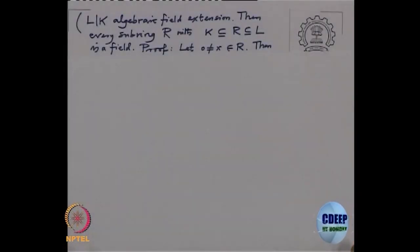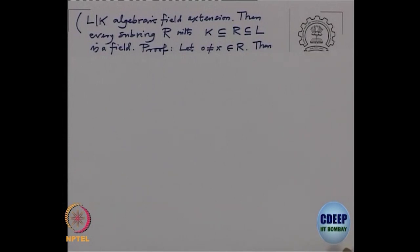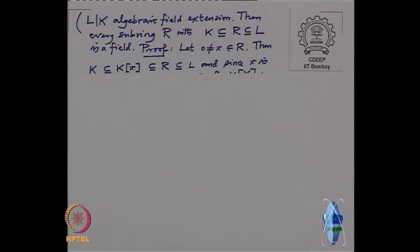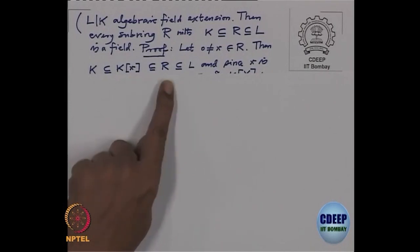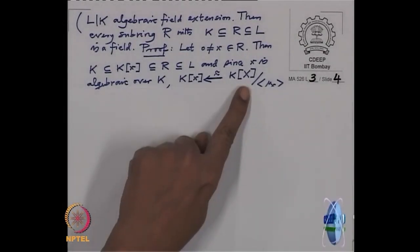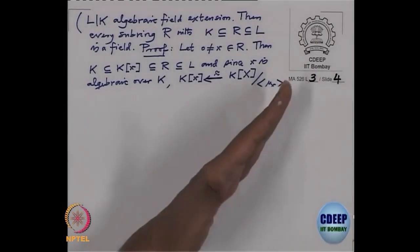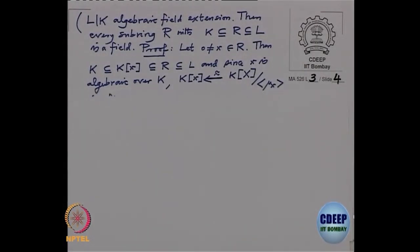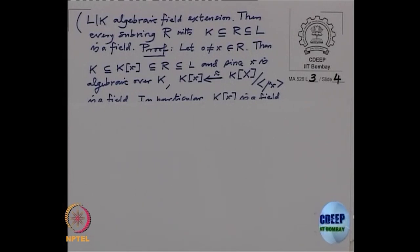So consider an algebraic extension of fields with a subring R in between. I want to show R is also a field — that every nonzero element of R is invertible. If x is in R, then K[x] is contained in R. But x is algebraic over K, so K[x] equals K[X] modulo the ideal generated by the minimal polynomial of x. Since the minimal polynomial is irreducible over K, it generates a maximal ideal (a nonzero prime ideal in a PID is maximal), so K[x] is a field and x-inverse lies in R.